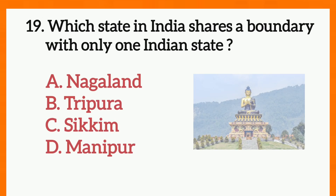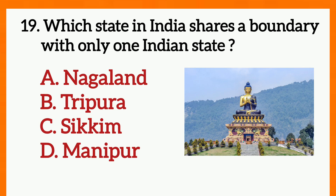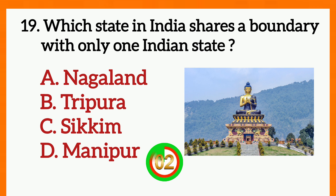Question number 19: Which state in India shares a boundary with only one Indian state? Correct answer is C — Sikkim.